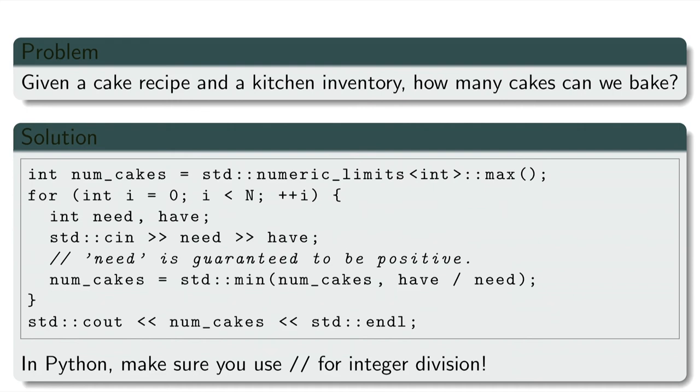In Python, starting from Python 3, you need to use a double slash operator to get integer division.